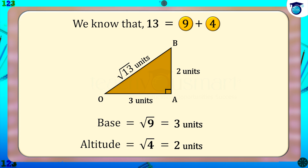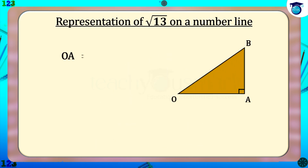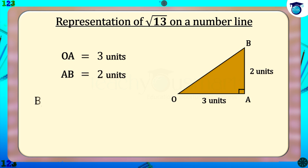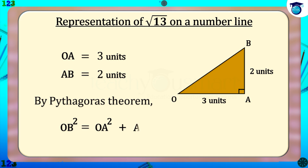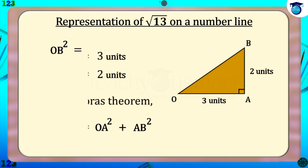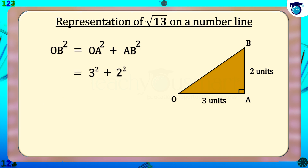Now let us prove this result by Pythagoras' theorem. If we take OA = 3 units and AB = 2 units, then by Pythagoras' theorem: OB² = OA² + AB² = 3² + 2² = 9 + 4 = 13. Therefore OB = √13 units.